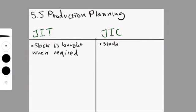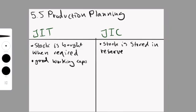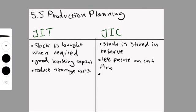So the differences between these two: for just in time, stock is bought when required; for just in case, stock is stored as reserves. Just in time is beneficial for working capital since you're saving money on storage, which means you can use more of your money for day-to-day activities. Just in case reduces pressure on the cash flow. Just in time reduces storage costs. Just in case reduces costs by buying in bulk where you can get special prices.